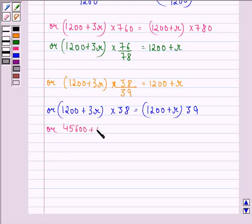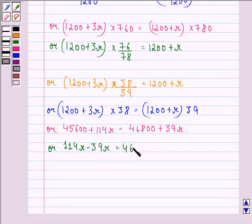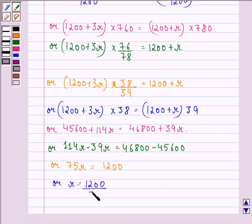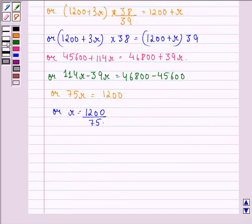45600 + 114R = 46800 + 39R. Or 114R - 39R = 46800 - 45600. Or 75R = 1200. Or R = 1200/75, and that is equal to 16%. So this is our answer.